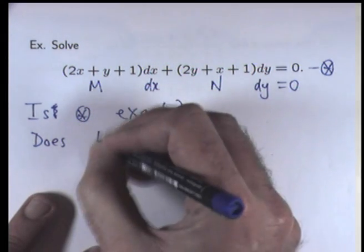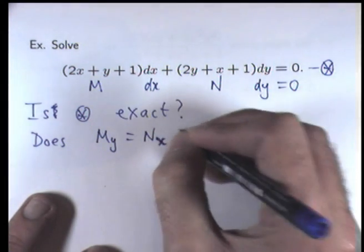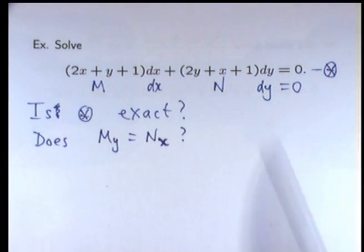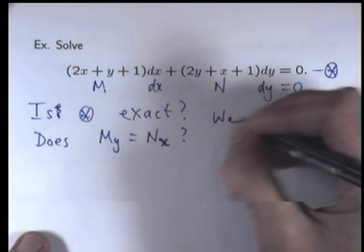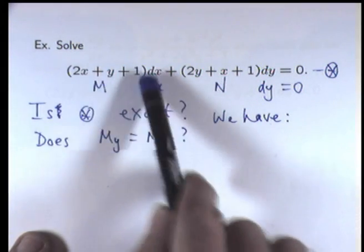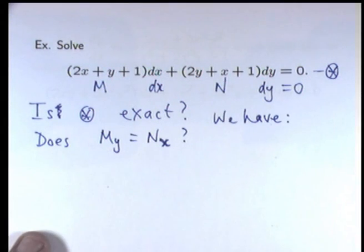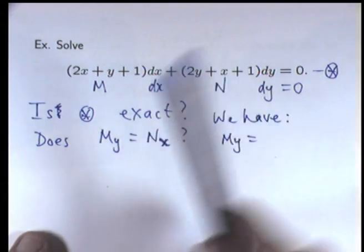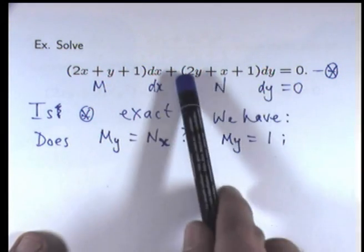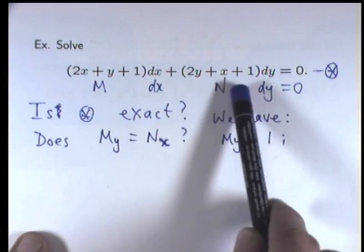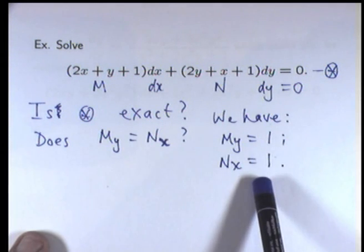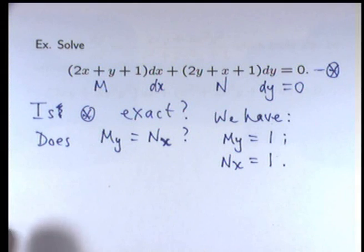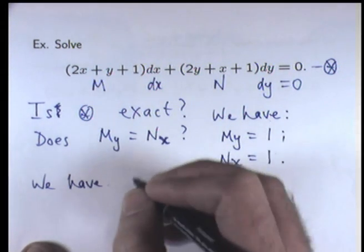So, this is the important question. Now, because these are polynomials, then the continuity of the partial derivatives are all satisfied. That's not a big deal. So, let's work out these partial derivatives and then compare them. So, m sub y is we differentiate with respect to y while holding all the other variables fixed. So, m sub y is going to be 1. n sub x, differentiate everything with respect to x while holding the other variables fixed. We also get 1. So, if we compare them, then yes, they are equal. We have equality.